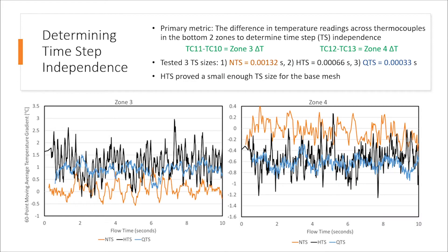Along with refining the mesh, it is vital our model is able to run with the largest possible time step while still being time step independent. The models take over a month to reach quasi-steady state where we can finally begin to evaluate the data. The larger the time step is, the faster the model can be developed. After running three different studies, we have determined time step independence for the base mesh. The primary metric for doing so was the temperature gradient in the bottom two zones. All of the conditions within zones 1 and 2 will have an impact downstream where zones 3 and 4 are, and this is where the temperature gradient we are using for time step independence is located.